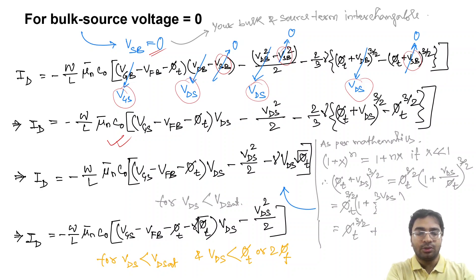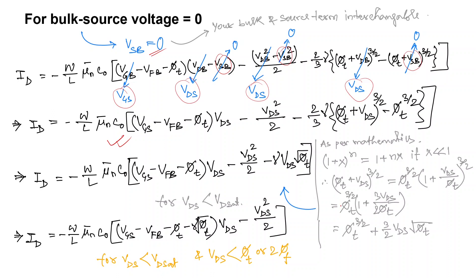With Vsb = 0, all Vsb terms become zero, and we can write Vgb = Vgs and Vdb = Vds. After doing this operation, Id becomes a new expression. The expression still has a 3/2 power term. We apply the power approximation: (1+x)^n ≈ 1 + nx when x << 1. We write (φt + Vds)^(3/2) = φt^(3/2) × (1 + Vds/φt)^(3/2), valid when Vds/φt << 1.